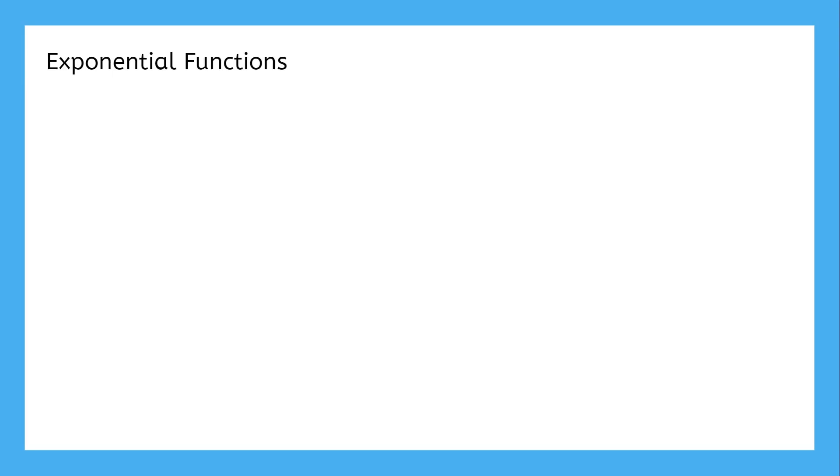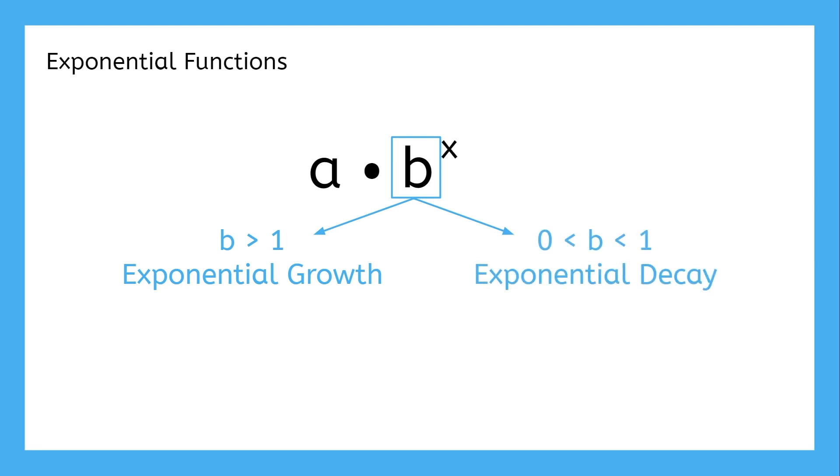All exponential functions are written in the same form, a times b to the xth power. The difference between growth and decay lies in the growth factor. If the growth factor is above one, it's exponential growth, just like we've been studying so far in this unit. But if the growth factor is between zero and one, it's exponential decay.